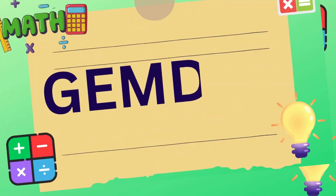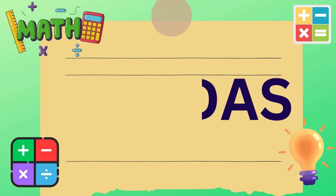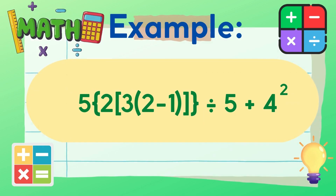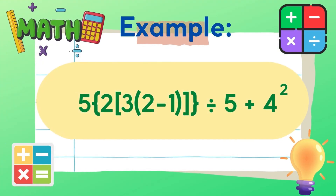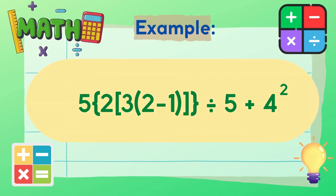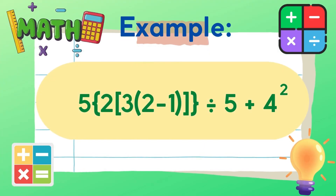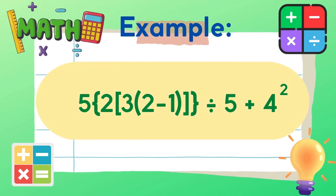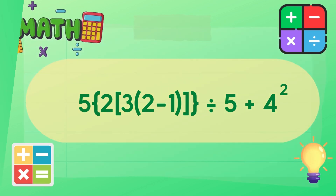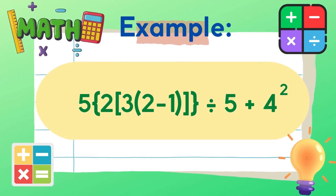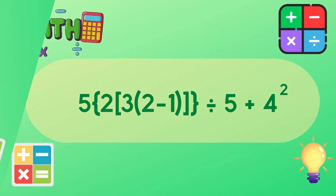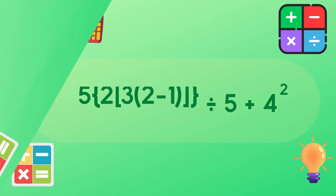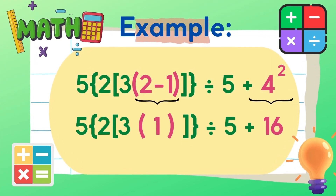This example follows the GEMDAS rule. Let's have another example. 5 times the quantity of 2 times the quantity of 3 times the quantity of 2 minus 1, then divided by 5, plus the square of 4. Remember that the grouping symbols — parentheses, brackets, and braces — are used to indicate the operation of multiplication. We need to perform first the operation inside the parentheses. So 2 minus 1 is equal to 1.